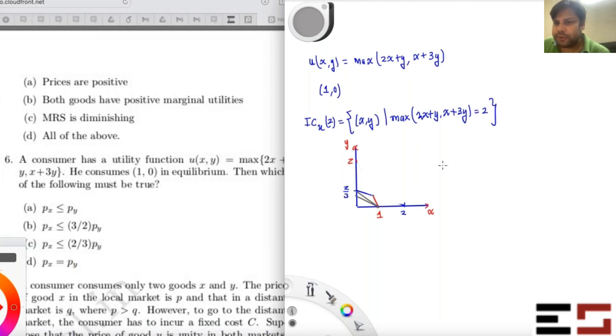So which is going to give you what px by py must be less than or equal to the slope of this line in absolute terms. So what is the slope of this line in absolute terms? Two by three. That's it. So px must be less than or equal to two by three py.